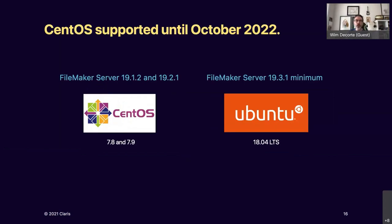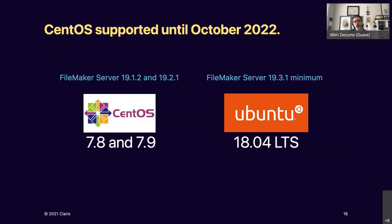Claris made the right move going away from CentOS and picking Ubuntu for the new versions. Ubuntu is also by a wide margin the more popular platform, and there are some future benefits we'll get to later. When you look at the supported versions — Ubuntu 18.04 and CentOS 7.8 and 7.9 — those are not the most recent releases, and that's for reasons of being conservative: you want the version that is thoroughly vetted with all the early bugs shaken out.